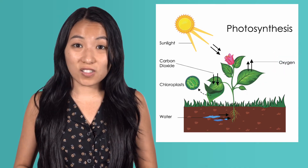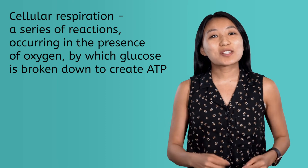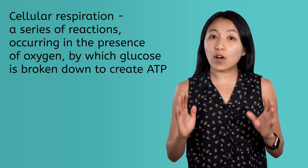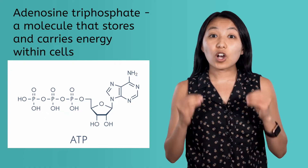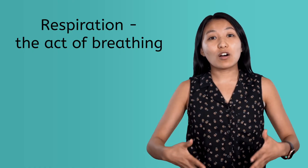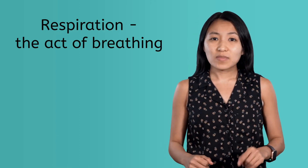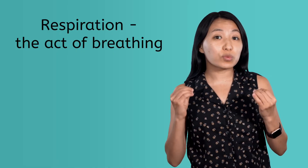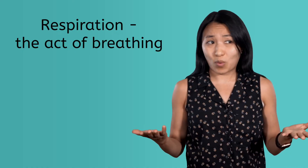In order to understand just how important oxygen is, we'll need to talk about a process called cellular respiration. Cellular respiration is a series of reactions occurring in the presence of oxygen by which glucose is broken down to create ATP. ATP, or adenosine triphosphate, is a molecule that stores and carries energy within cells. Your cells are constantly spending ATP to survive, and cellular respiration is their way of replenishing it so they don't run out. You can think of cellular respiration as breathing at a cellular level — it is our individual cells that need oxygen gas specifically for this process of creating ATP, which is why we breathe at all.